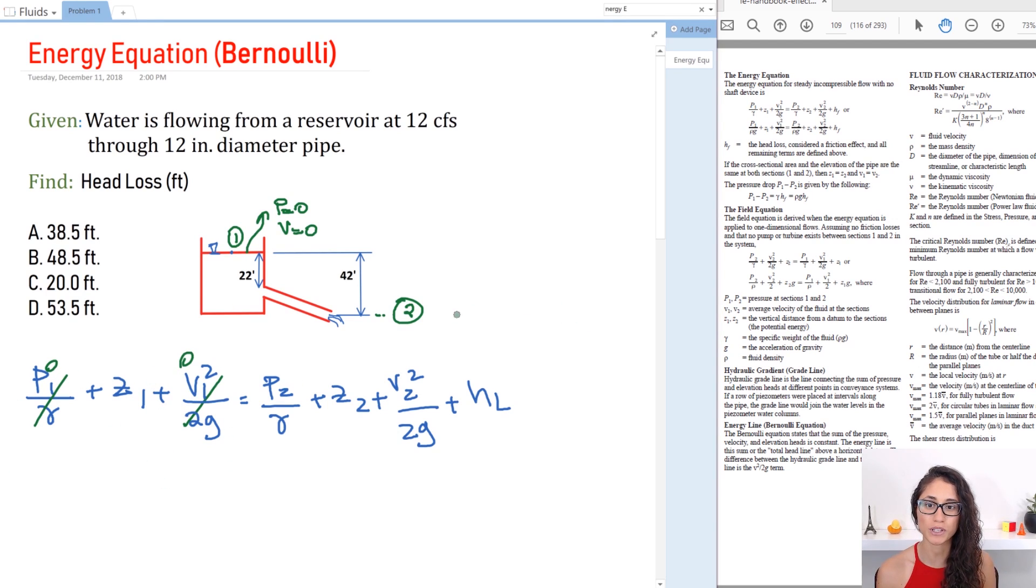So this term is 0 and this term is 0. So let's now determine Z1. So if we take this as our datum that means we're going to consider it to be 0. Now Z1 which is here it's going to be this height right here 42. So Z1 is 42 feet. Now P2 is going to be 0 because this is point 2 and again we said pressure at the surface is 0 so that's going to be 0. Now Z2 is going to be 0 because we picked this as our datum and now we need to just calculate for the velocity so that we can solve for HL.